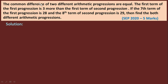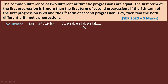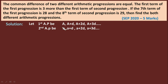In the question, it is given that the common difference of two different arithmetic progressions are equal, so common difference d is the same. Let the first arithmetic progression be A, A+d, A+2d, A+3d... and the second arithmetic progression be a, a+d, a+2d, a+3d... Here I have taken capital A for the first AP and small a for the second AP, and the common difference is the same for both.